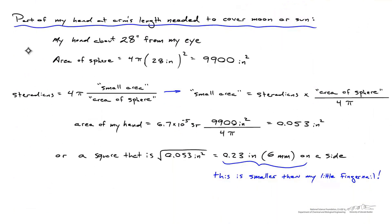I was curious: now that we know the sun and moon occupy the same area of the sky, what part of my hand, if I held it at arm's length, would be needed to completely cover the moon or the sun? I measured that my hand is about 28 inches from my eye. The area of the sphere swept out with my hand at that distance is about 10,000 square inches. The number of steradians is 4π times the small area divided by the area of the entire sphere.